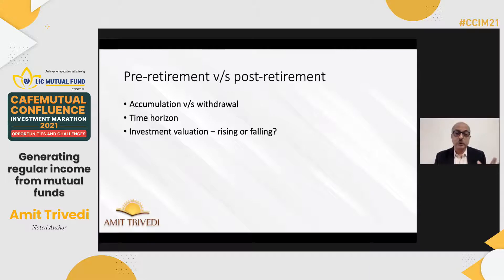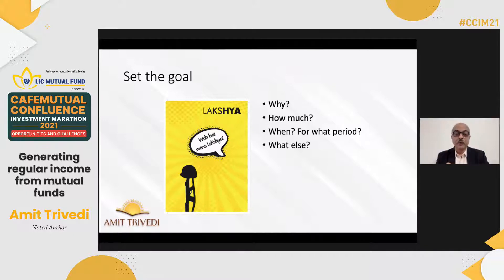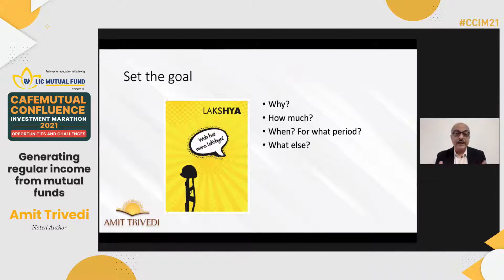Let's start with the basic exercise of — as management guru Simon Sinek always says — start with why. What is the objective? Why do you need this regular income? What is the purpose of that regular income? How much do you need? When do you need it, meaning starting when? And for what period would you need that income? Are there any other conditions? Let's look at two scenarios.